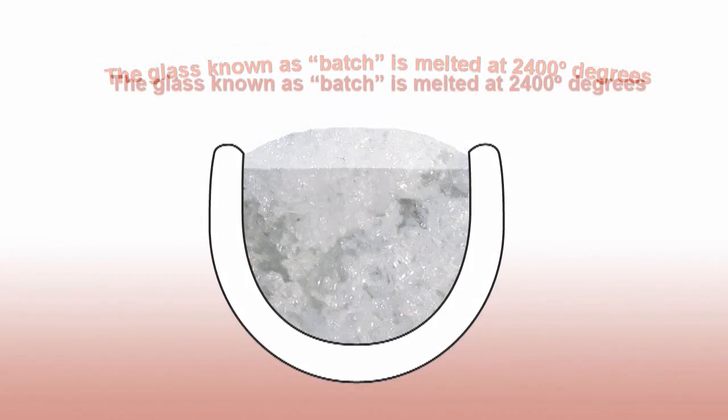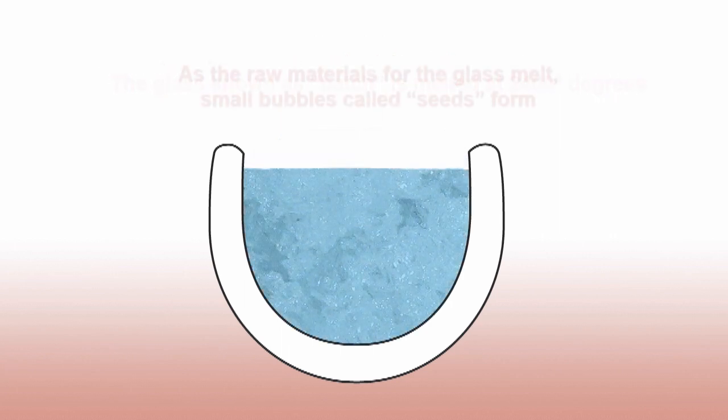As the glass is melting, small bubbles, which are called seeds, form in the glass.